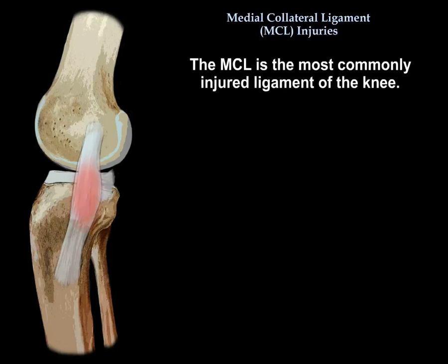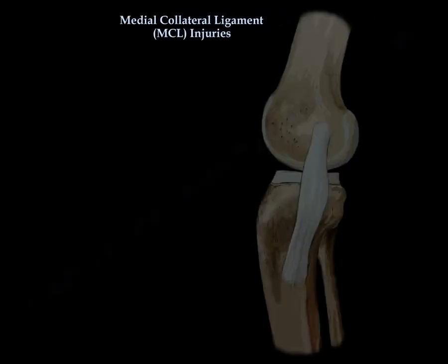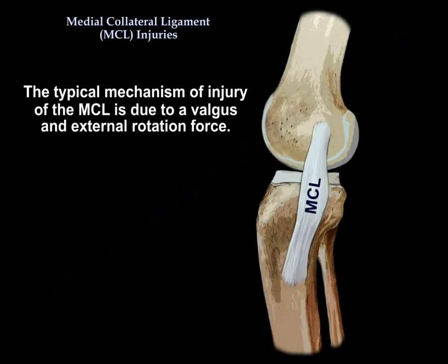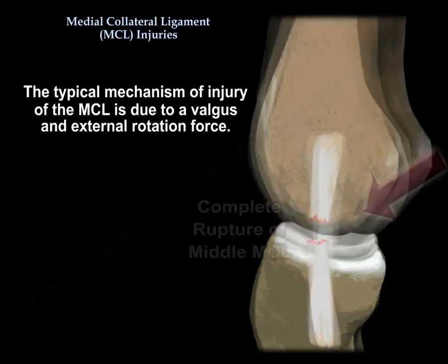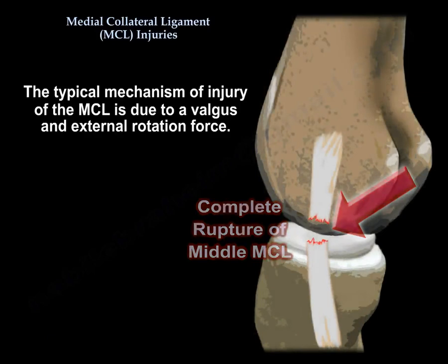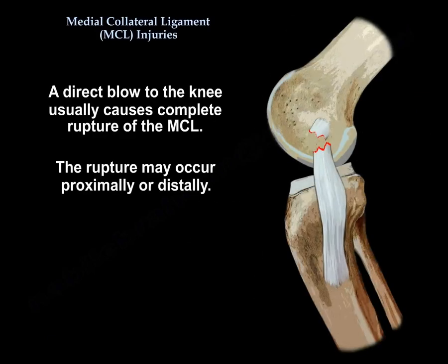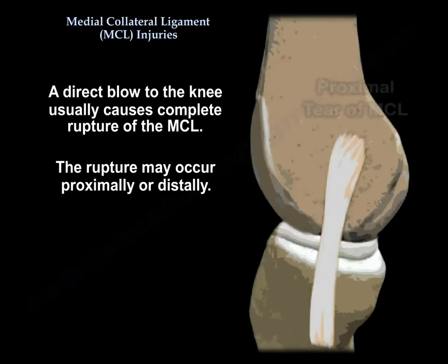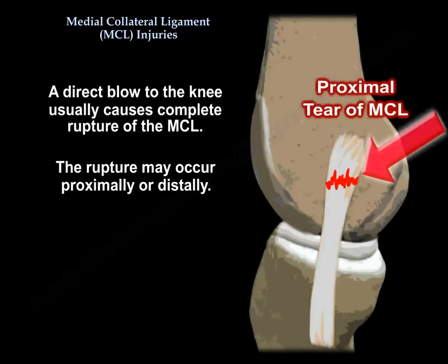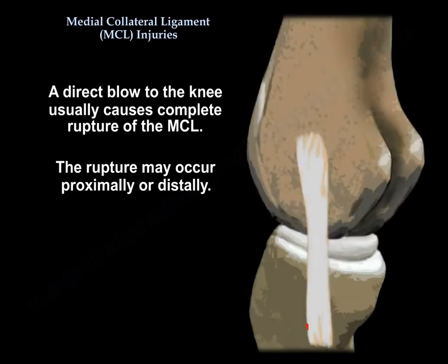The MCL is the most commonly injured ligament of the knee. The typical mechanism of injury is due to a valgus and external rotation force. A direct blow to the knee usually causes complete rupture of the MCL, which may occur proximally or distally.